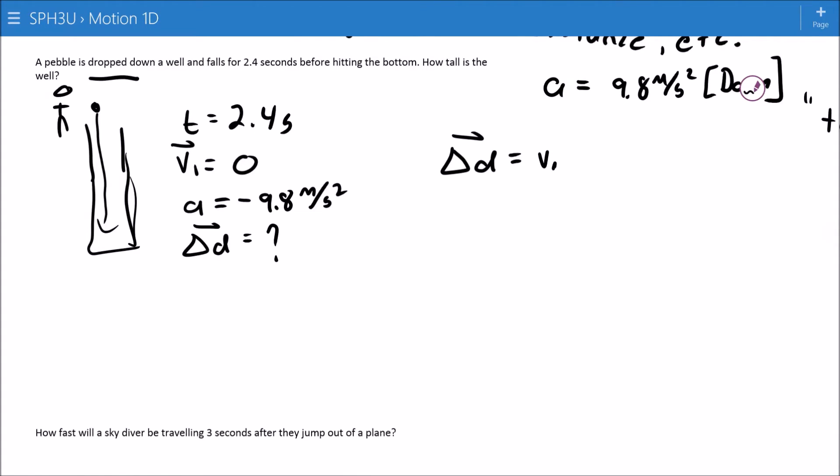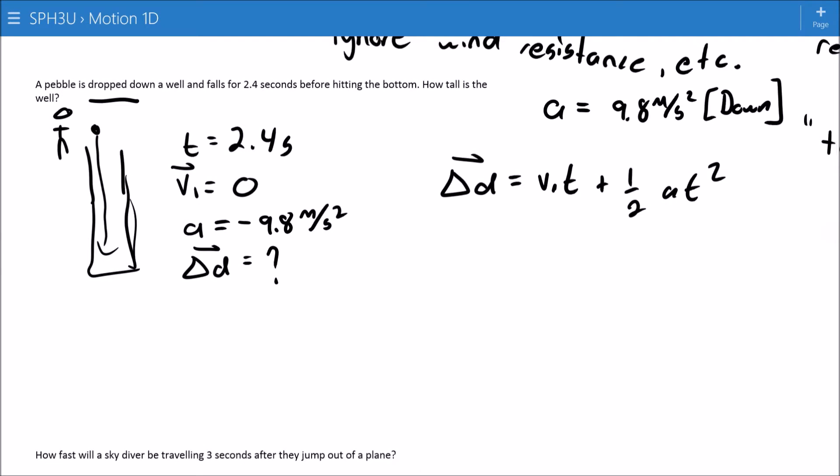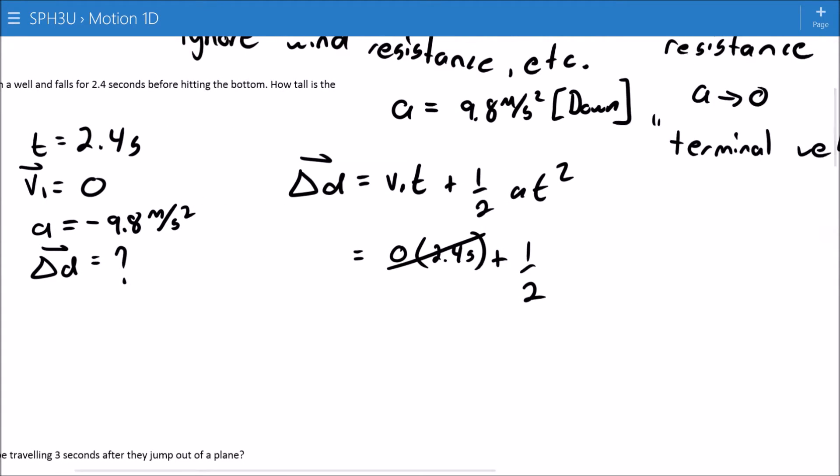Displacement is equal to initial velocity times time plus one-half acceleration times time squared. So that means zero. Nice when we have zero in a term because that means that whole term will go away. Plus one-half negative 9.8 meters per second squared times the time of 2.4 seconds squared. And let's just calculate our work here.